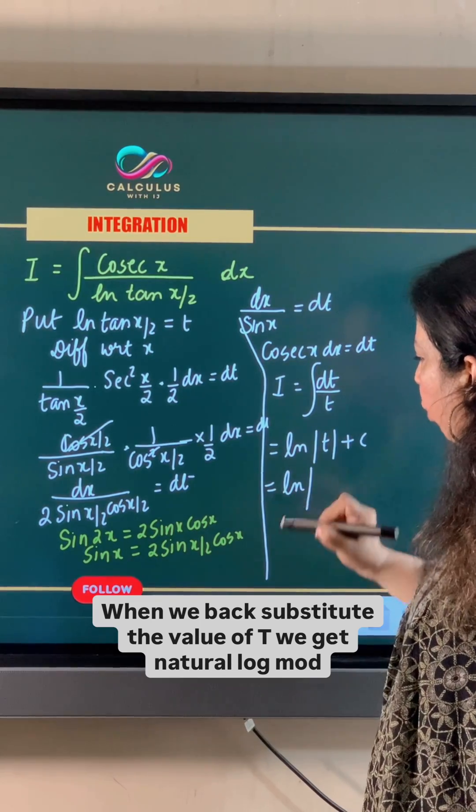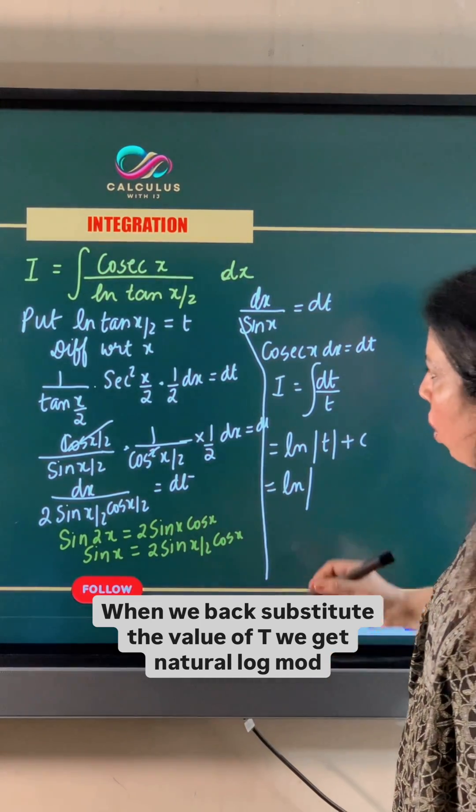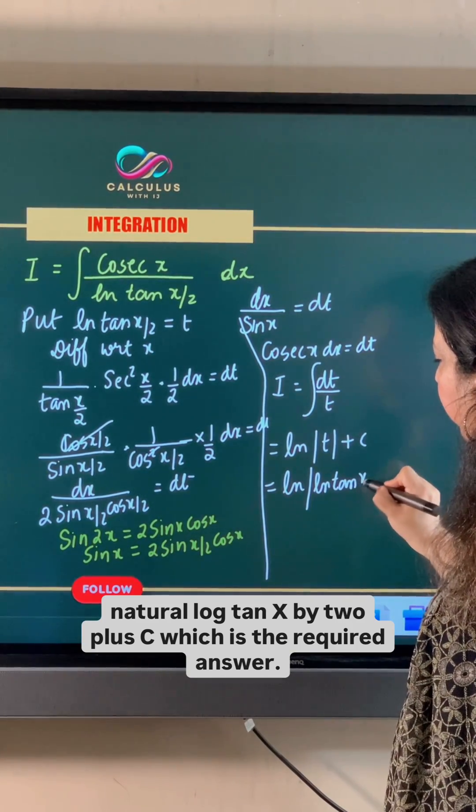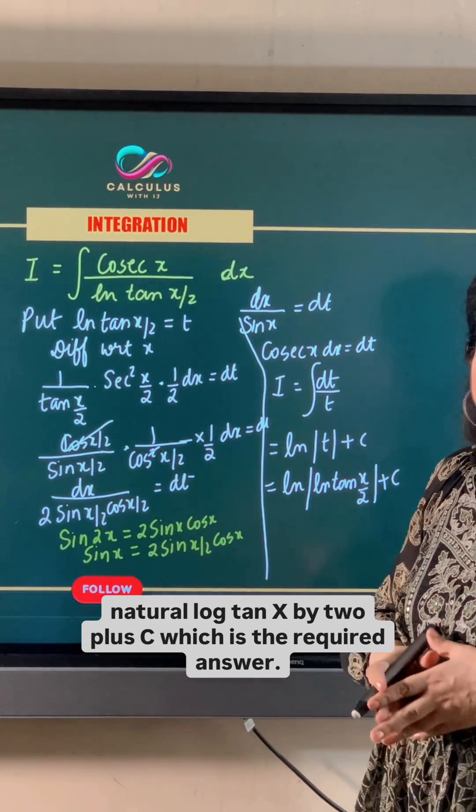When we back substitute the value of t, we get natural log mod natural log tan x by 2 plus c which is the required answer.